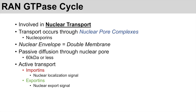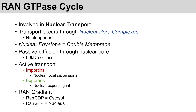Important in this RAN-GTPase cycle is this idea of a RAN gradient. RAN is simply a protein, and it can come in a couple of different forms. One is RAN-GDP, which is primarily found in the cytosol, and there is RAN-GTP, which is primarily found in the nucleus. We'll talk about why that is in the next slide. But recognize that in total, when we look at all the RAN protein in the cell, about only 5% is located in the cytosol, while the remaining 95% is located in the nucleus.